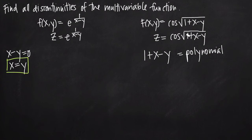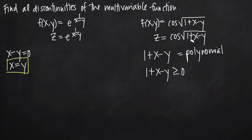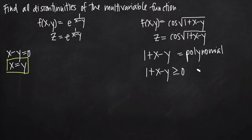But when we put it underneath a square root sign, when we take the square root of something, we want whatever's underneath that square root sign to be greater than or equal to zero. So we have to say 1 plus x minus y is going to be greater than or equal to zero — that's the restriction we need. Other than that, there's nothing to restrict about the polynomial or cosine functions on their own, since both are continuous everywhere.